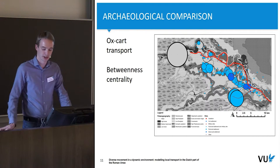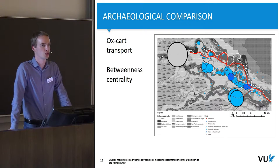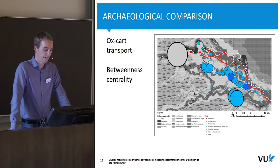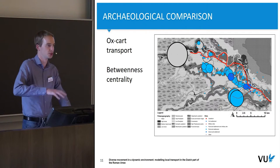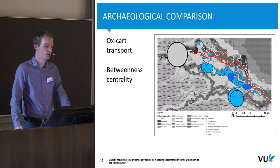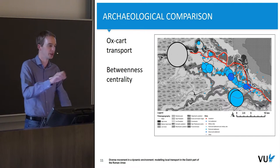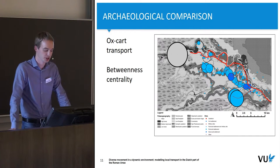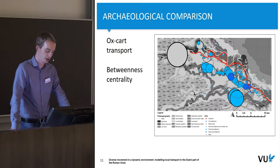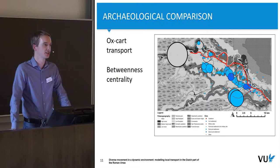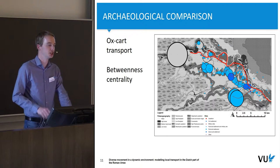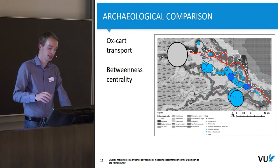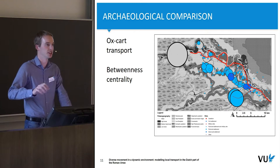We are trying to think about different scenarios of how the local population could have supplied the Roman military. There are two possible ideas to compare: one is that the local population would bring goods directly from local settlements to the military settlements; another is that there are intermediary sites where people would move goods first. This is a kind of question you can answer using network analysis through closeness centrality, which measures how easily a site can be reached from all other sites. We can compare how easily an intermediary site can be reached versus the scenario where people go directly to the Castella.